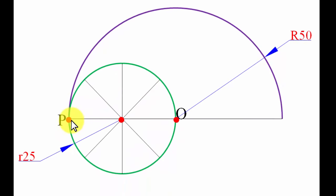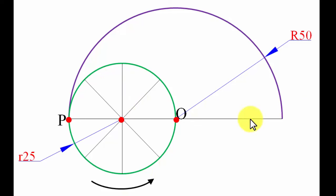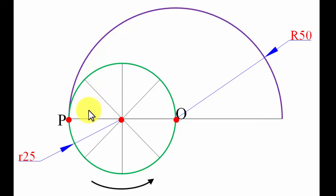Divide this entire rolling circle into eight equal parts — first four equal parts, then bisect to get eight equal parts. This is the point P, the key point we need to track. It will rotate in the anticlockwise direction, rolling inside the directing circle arc, and finally end up back at the starting position after one complete revolution.